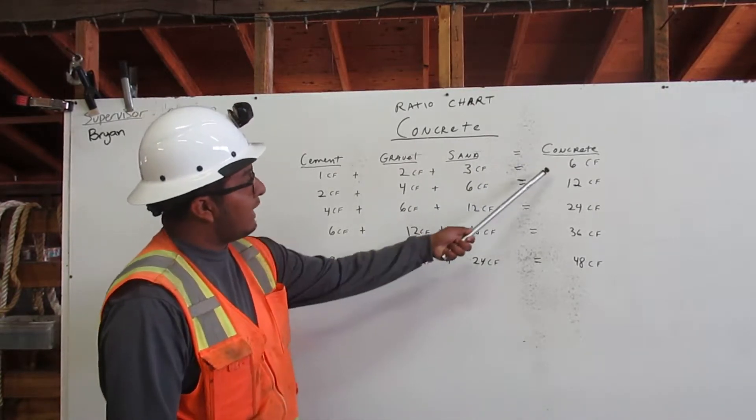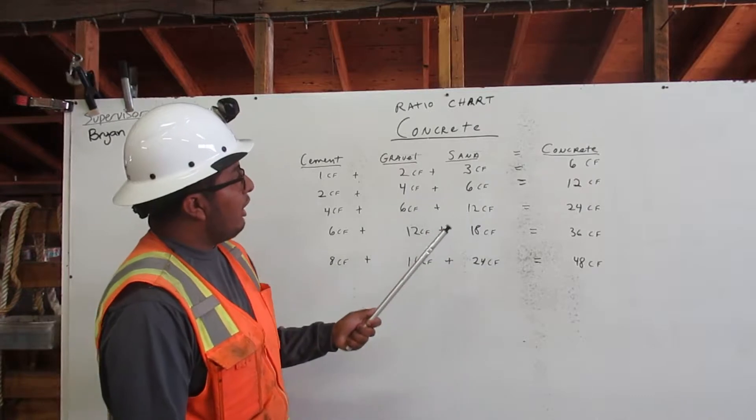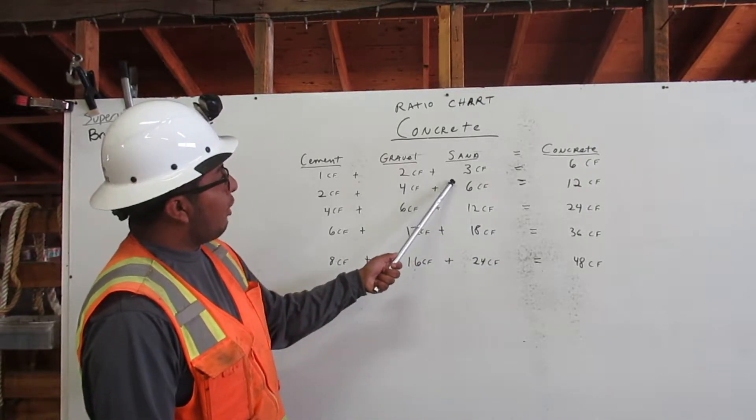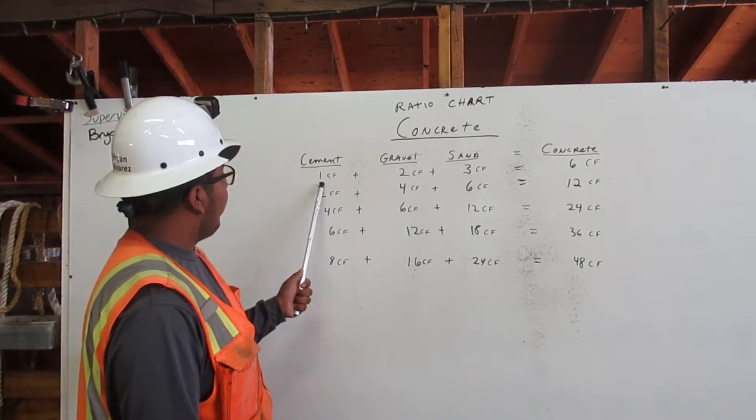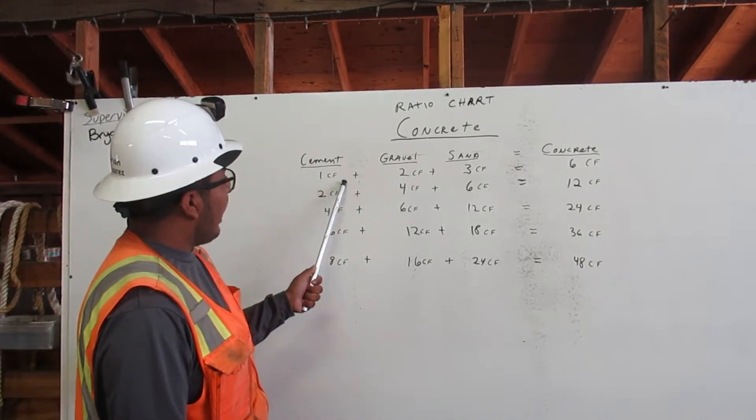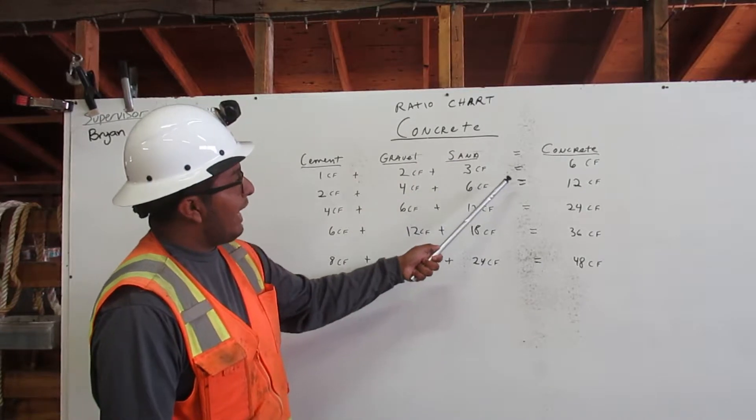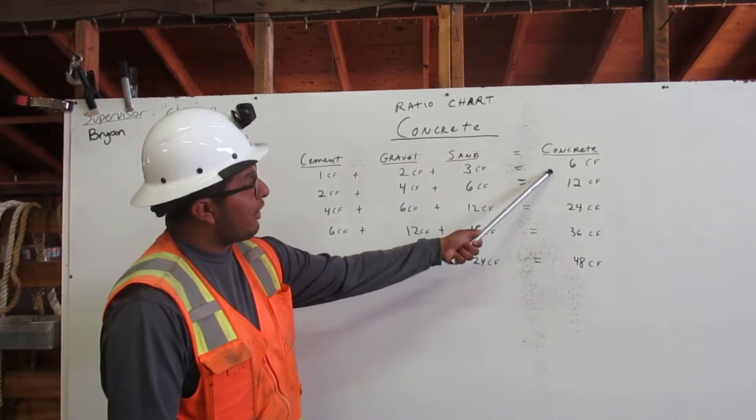To get six cubic feet of concrete, we need three cubic feet of sand, two cubic feet of gravel, and one cubic foot of cement. We add these all together and we get six cubic feet of concrete.